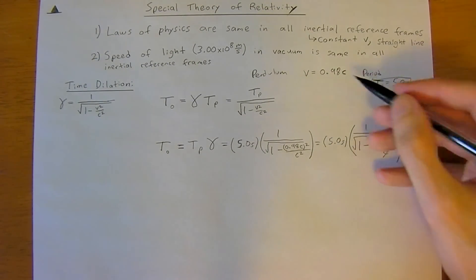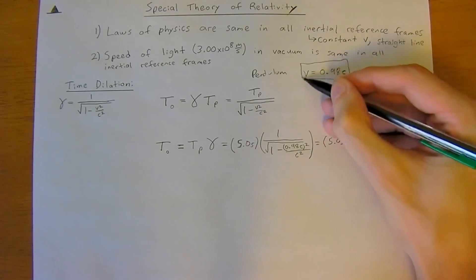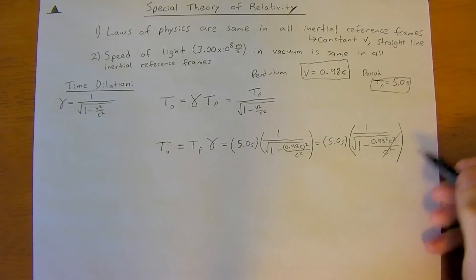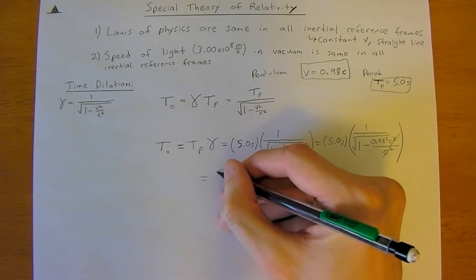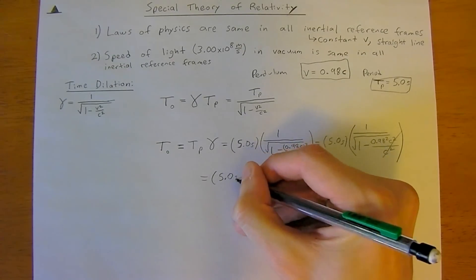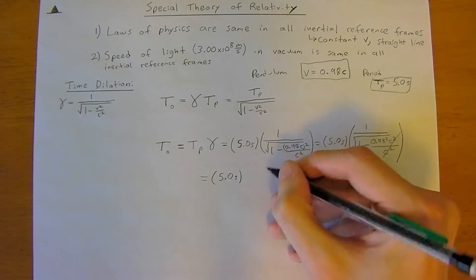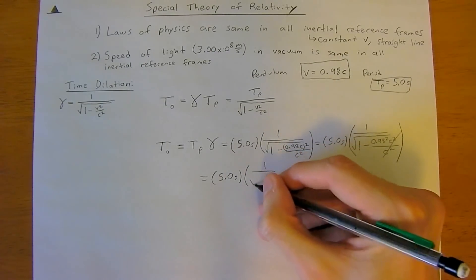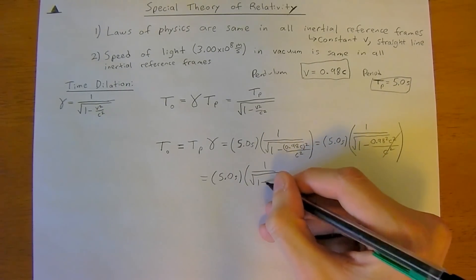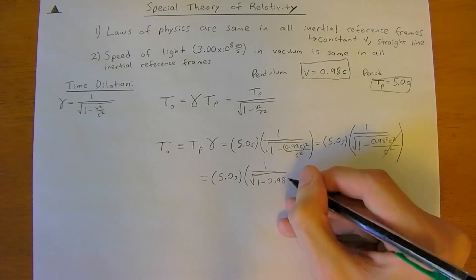And you'll see why we work with this notation here, because it makes it a lot easier. So, this is just going to be equal to 5.0 seconds times 1 over the square root of 1 minus 0.98 squared.